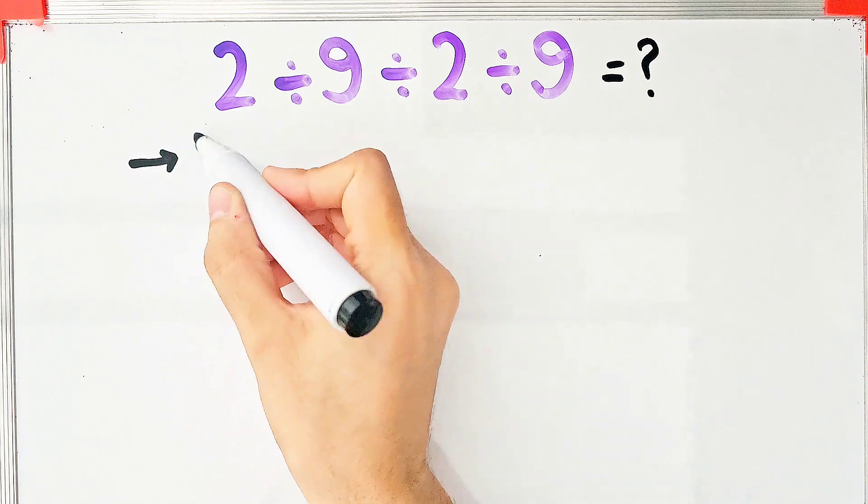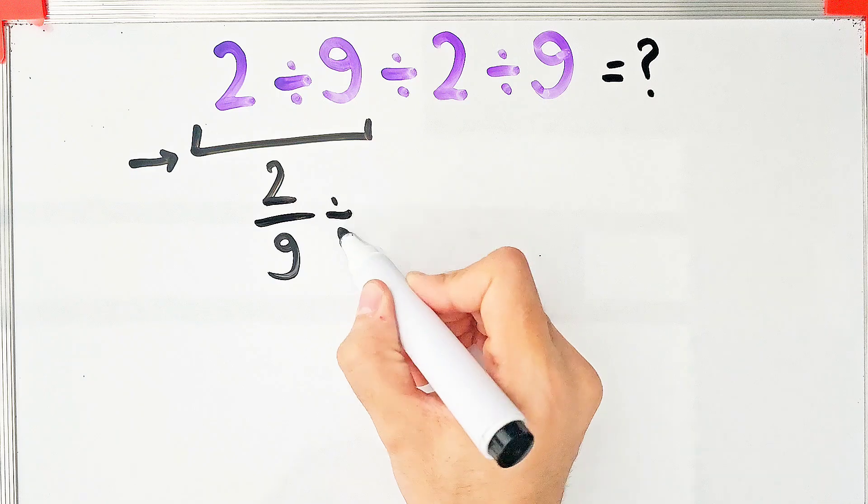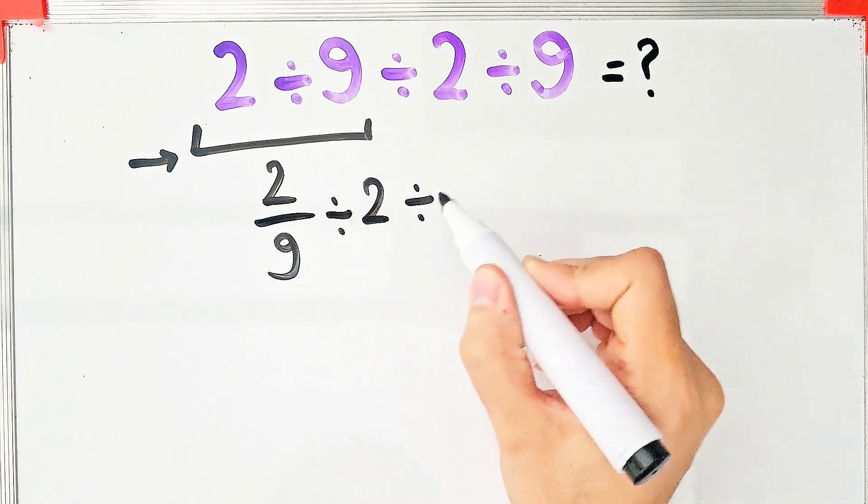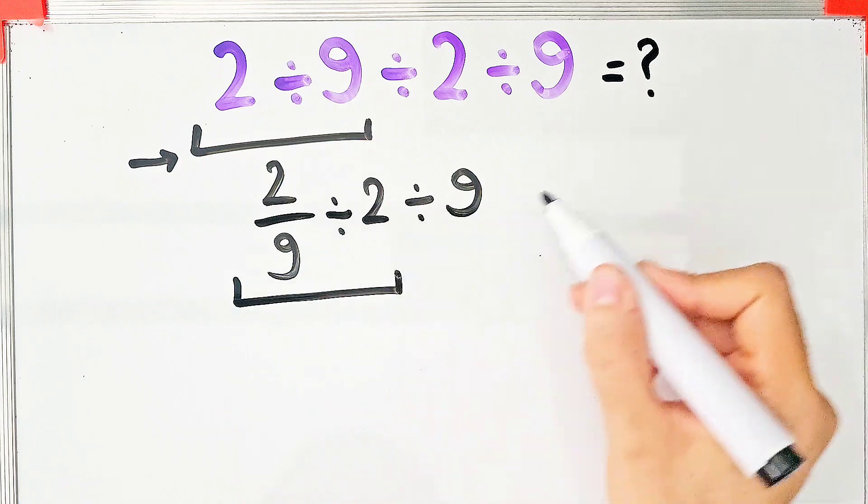Let's solve it step by step together. Because we have 3 divisions, we start from the left and simplify. 2 divided by 9 equals 2 over 9. We have 2 over 9 divided by 2 then divided by 9. Now we simplify this part.